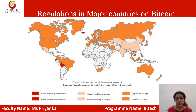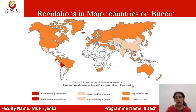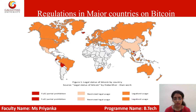Looking at the regulations by major countries of the world: countries shown in red have restricted or partial prohibition. Very few countries have fully prohibited Bitcoin. Countries like India had restricted legal usage — it was also completely banned in India a few years back. Countries shown in orange, like the USA, Europe, parts of North America, Russia, and Australia, have allowed legal usage of Bitcoin.